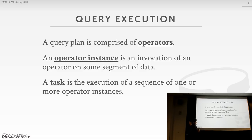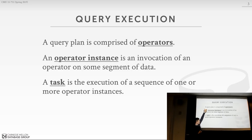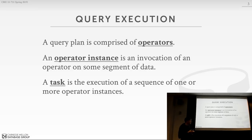There are some terms I want to define. A query plan is what the optimizer generates — it's a tree structure. At the leaf nodes you have access methods that read data from storage, then that data flows up into other operators for filtering, joins, and other operations. Those operators are called operators. We'll make a distinction between physical and logical operators later, but for now it doesn't matter. One operator could be a join, another a group-by or projection.